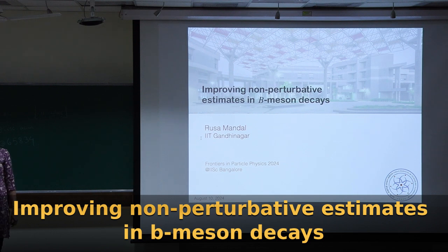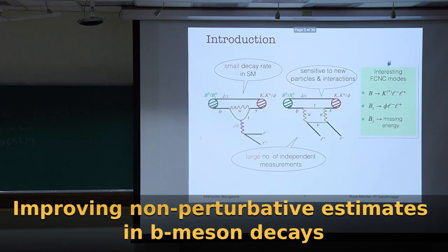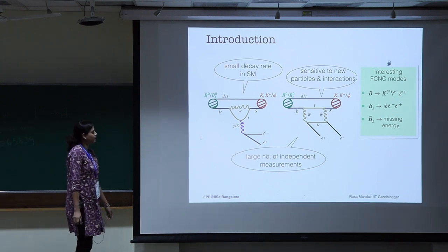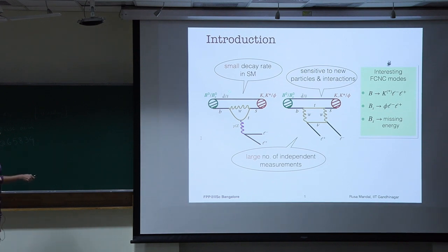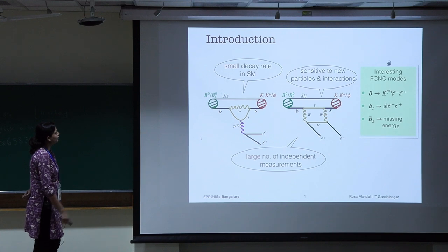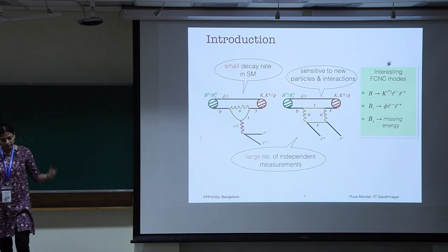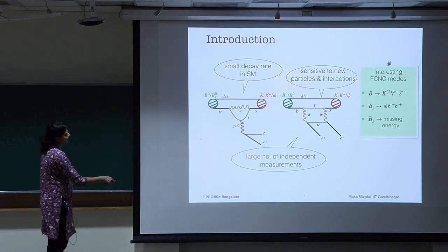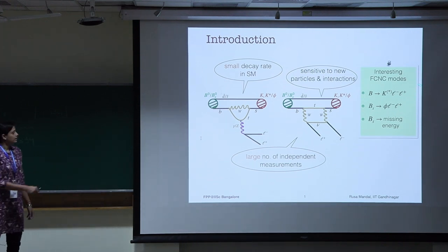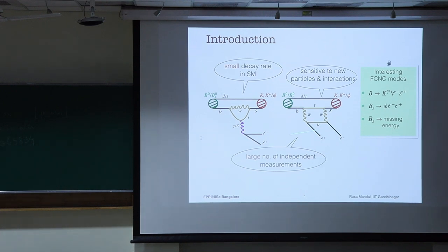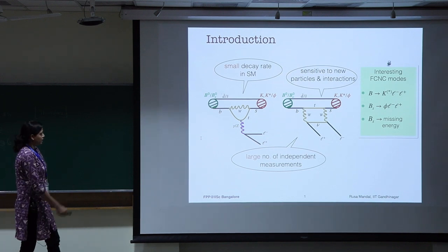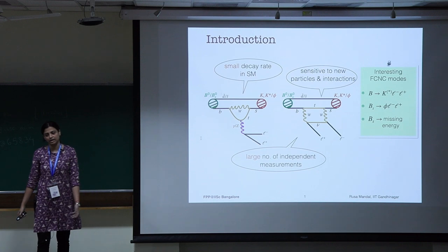For the younger part of the audience, I will briefly mention what we do with B mesons and what are the interesting things there. You might have come across various FCNC modes in B decays, where a B quark decays to an S quark via a loop. In the standard model, these modes are suppressed by the loop and the CKM factor, so these are an interesting place where new physics can show up. The semi-leptonic modes particularly, where a B decays to another meson and some leptons, are very interesting because we can construct a large number of independent observables and perform various measurements at B factories.